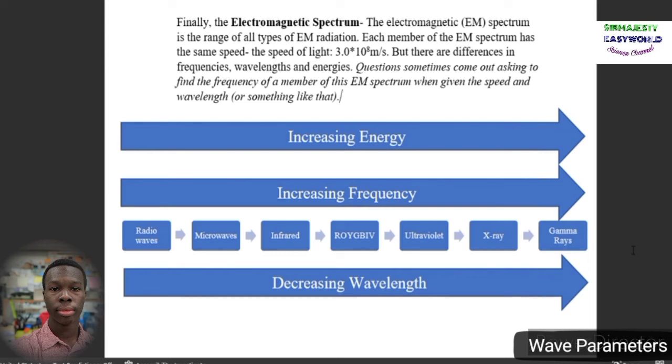As you go from left to right, there's an increase in frequency. If you recall the equation earlier, E equals hf, as frequency increases, energy will increase. If you recall our relationship earlier, as frequency goes up, the wavelength will decrease. So you also see a decrease in wavelength as you go from left to right.